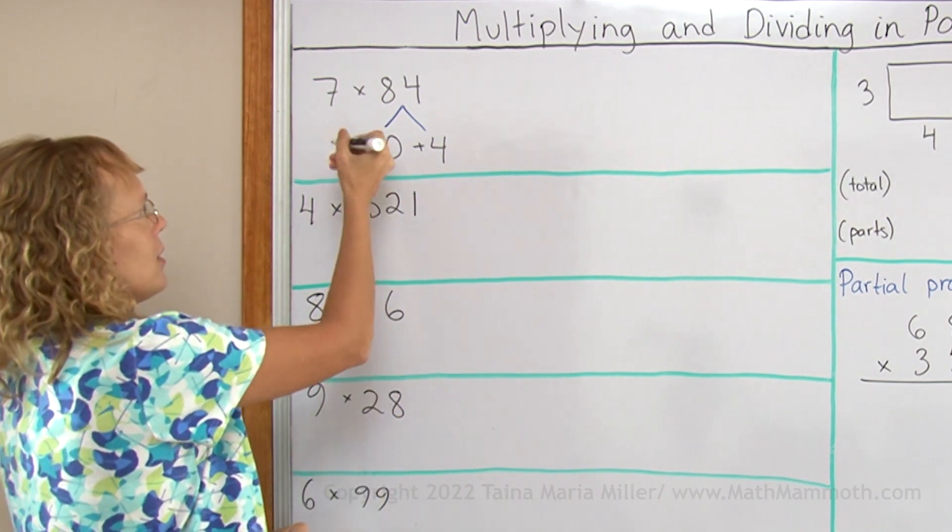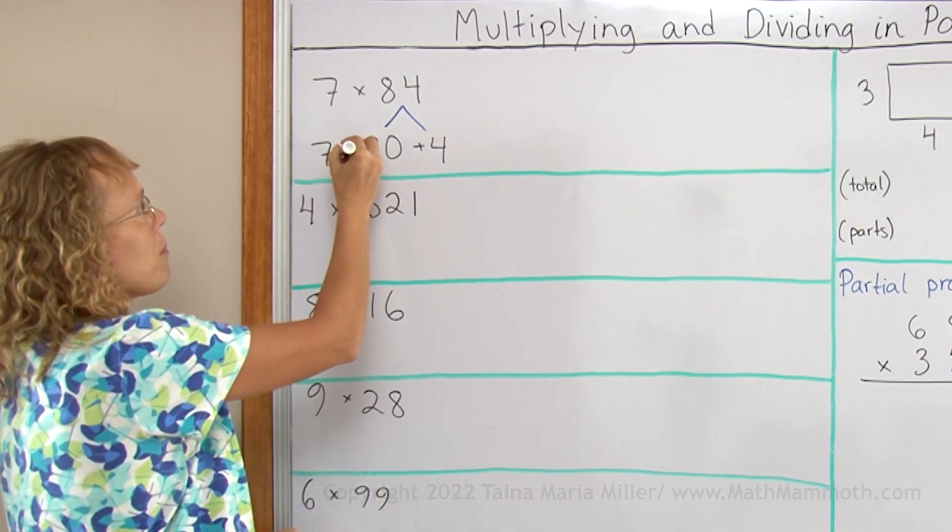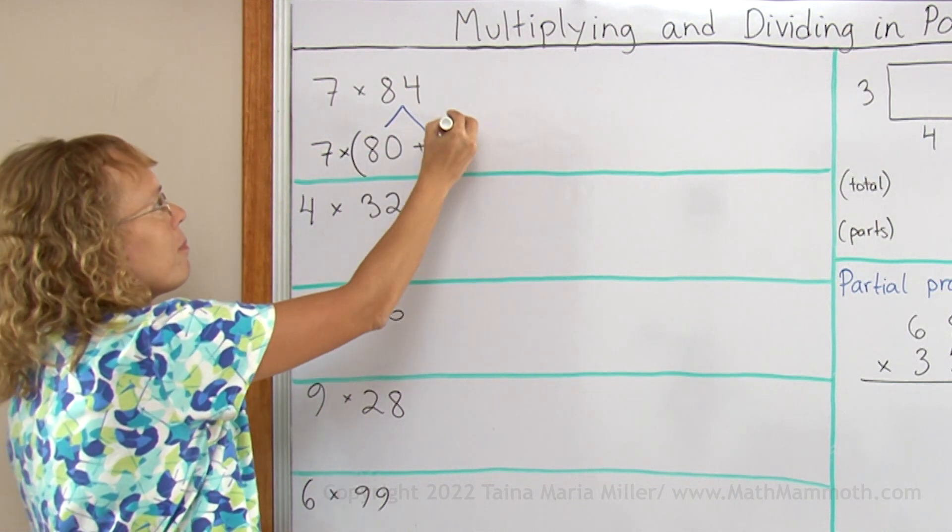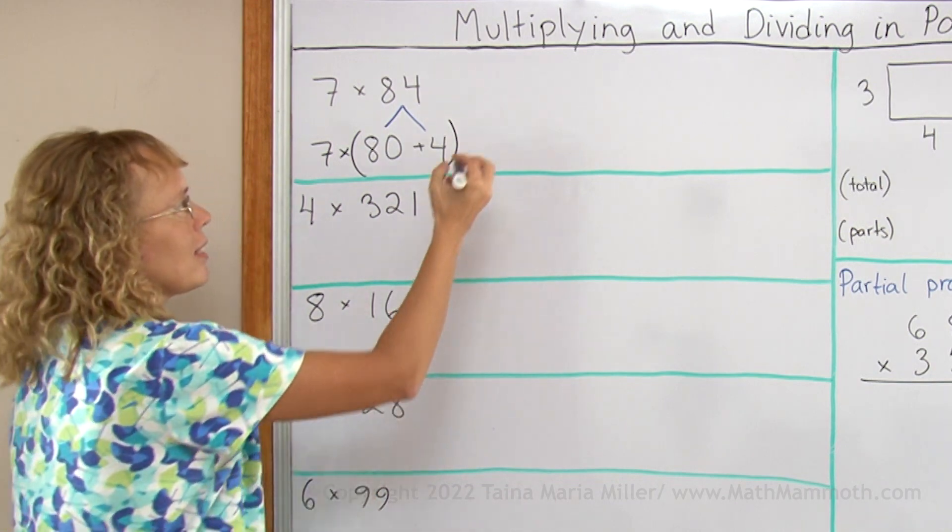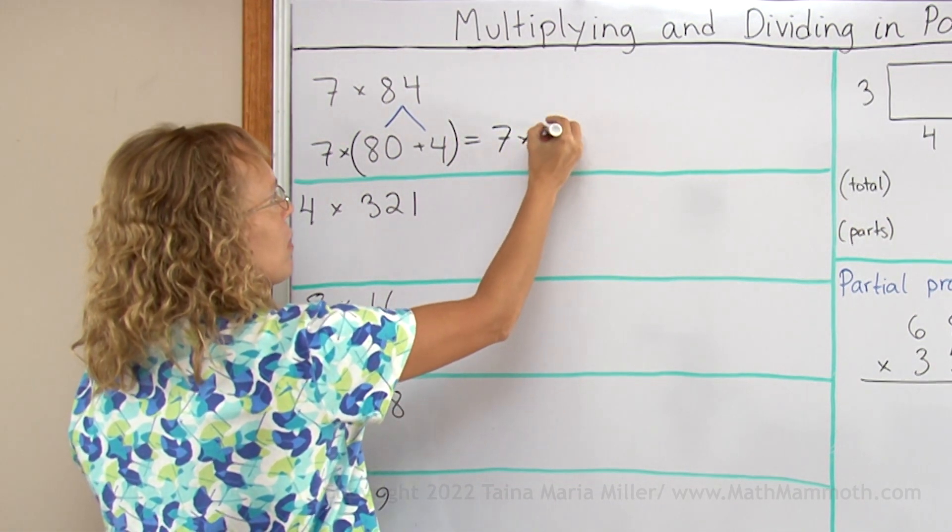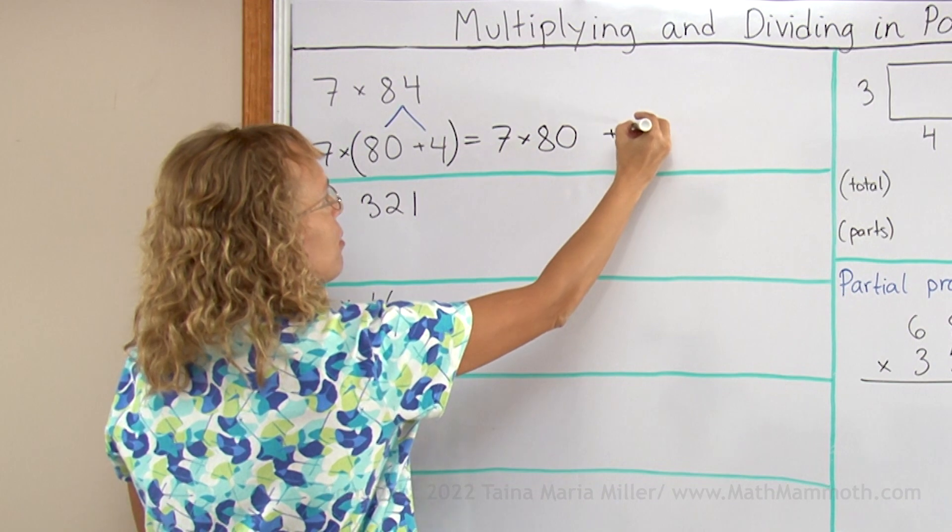And then I'll write the 7 times here too, 7 times 80 plus 4. Now I will multiply it in two parts, 7 times 80 and 7 times 4.